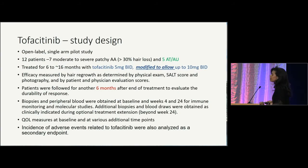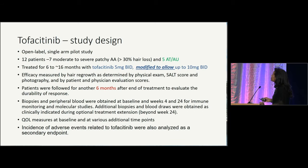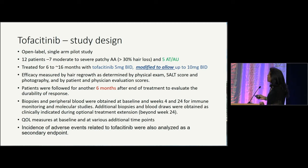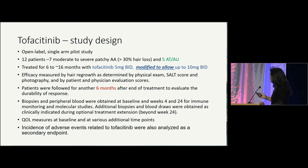We then moved on to looking at tofacitinib — again an open-label, single-arm study. Twelve patients were enrolled, this time including more patients with totalis and universalis. We treated patients for longer — 16 months — starting with tofacitinib 5 milligrams twice a day, and based on observations we modified the study to allow higher dosing at 10 milligrams twice a day. We followed patients for six months after treatment and again collected biopsies and peripheral blood.